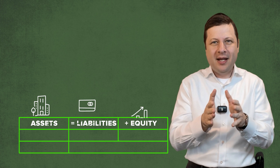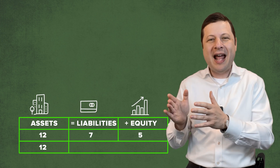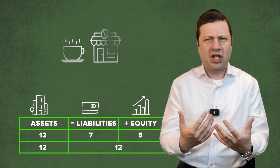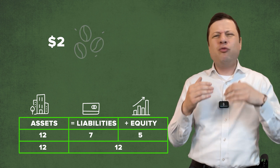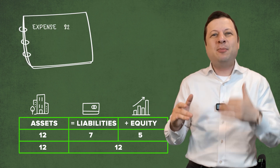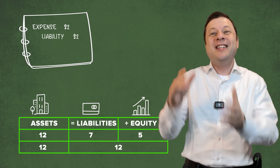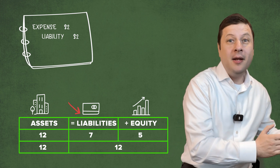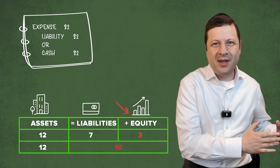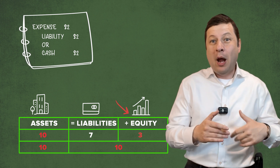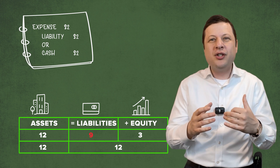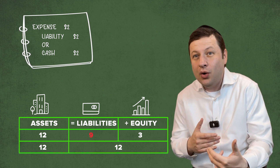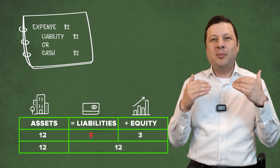Let's use simple numbers to make this crystal clear. Assets equals liability plus equity: $12 equals $7 plus $5 — 12 in assets, seven in liabilities, five in equity. Let's say you have a coffee shop and an expense of $2. You debit expense right away because expenses decrease net income, which reduces equity. On the opposite side of its natural balance, it's a debit to expense, and you credit either a liability or cash. Equity is definitely down to $3.